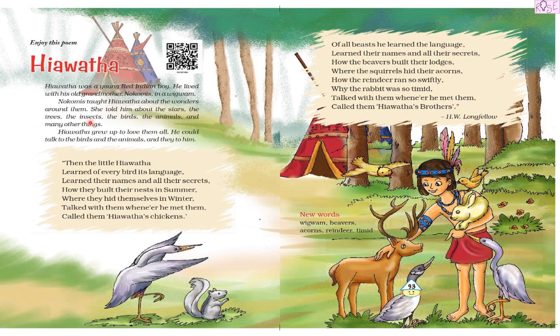Hiawatha grew up to love them all. He could talk to the birds and animals, and they could talk to him. This was what was special about Hiawatha — he loved all the birds and all the animals, and he could talk to them. From this paragraph, we now know who Hiawatha was, where he lived, and what he loved.